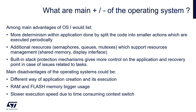The main disadvantages of an operating system could be a different way of application creation and its execution, higher RAM and flash memory usage, and slower execution speed due to time consumed by the context switch.